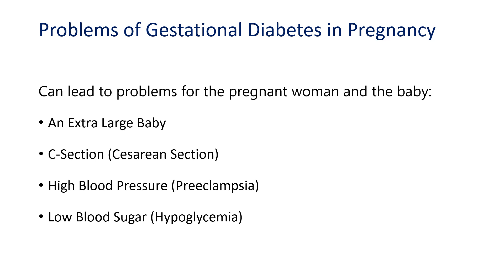We have already discussed the problems of gestational diabetes in pregnancy. You may have a big baby or need a cesarean section. If you have gestational diabetes, you are also at risk for high blood pressure, which can lead to a condition known as preeclampsia — having high blood pressure can lead to epilepsy or stroke. Controlling your blood sugar is very important. You may also have hypoglycemic episodes, that is episodes of low blood sugar.